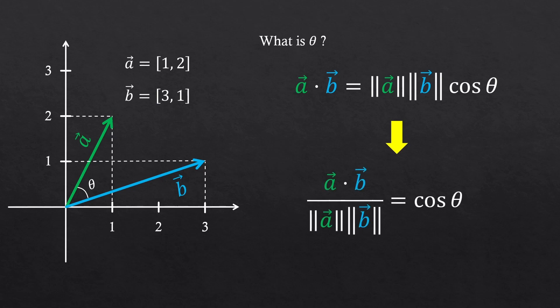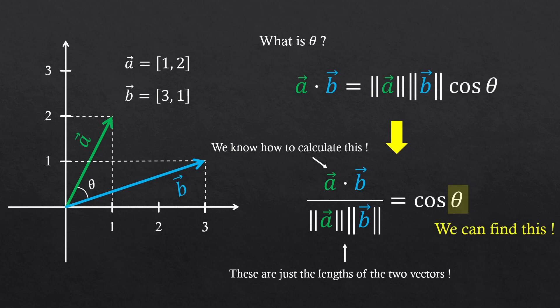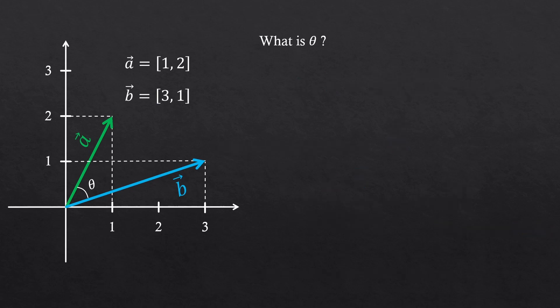I just move the magnitudes of a and b to the other side. We all know how to calculate this. Just the matrix multiplication. And you know how to find the length of the vectors. Just use the Pythagorean theorem. Then we should be able to find this theta. Let's try it.